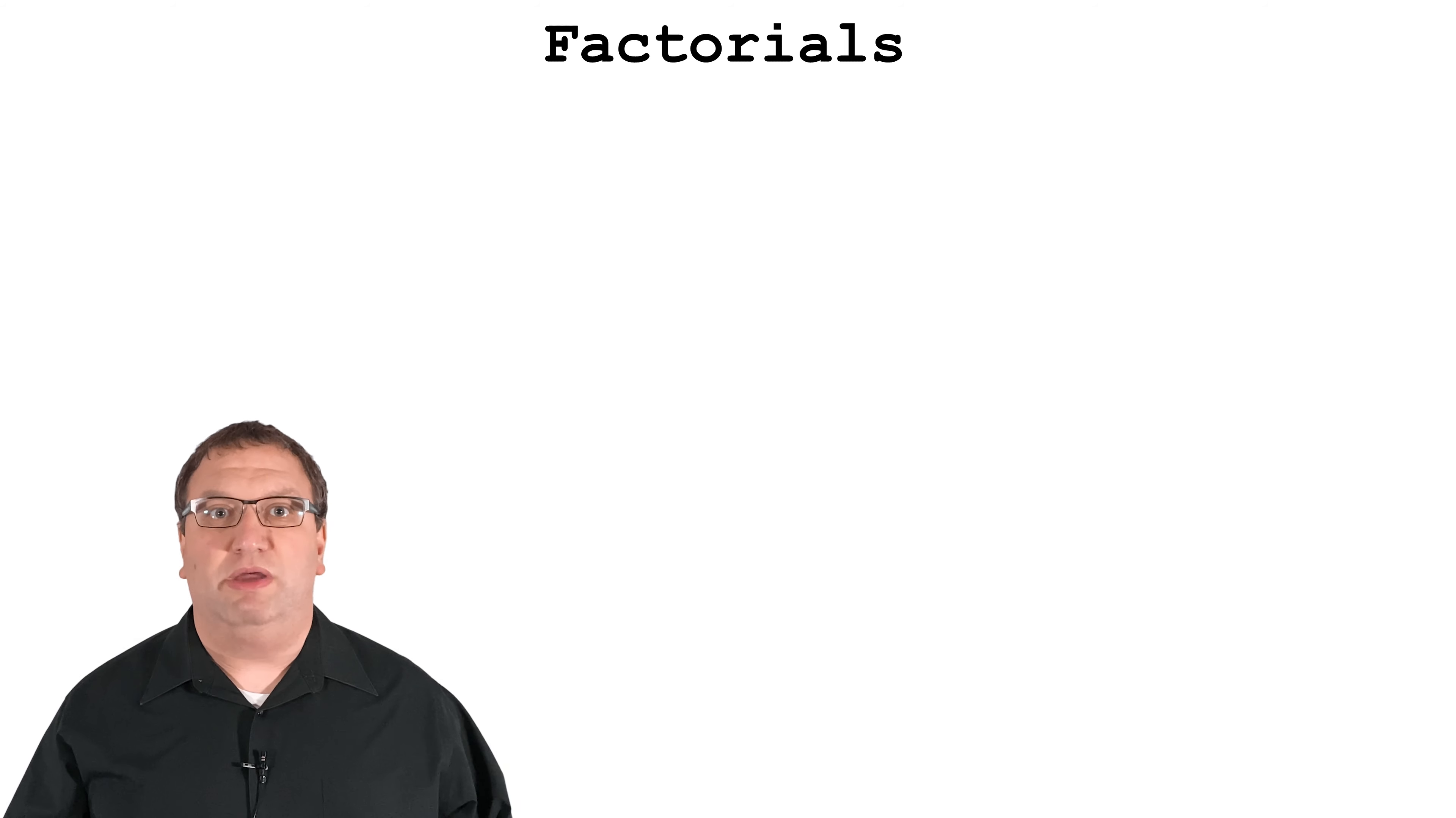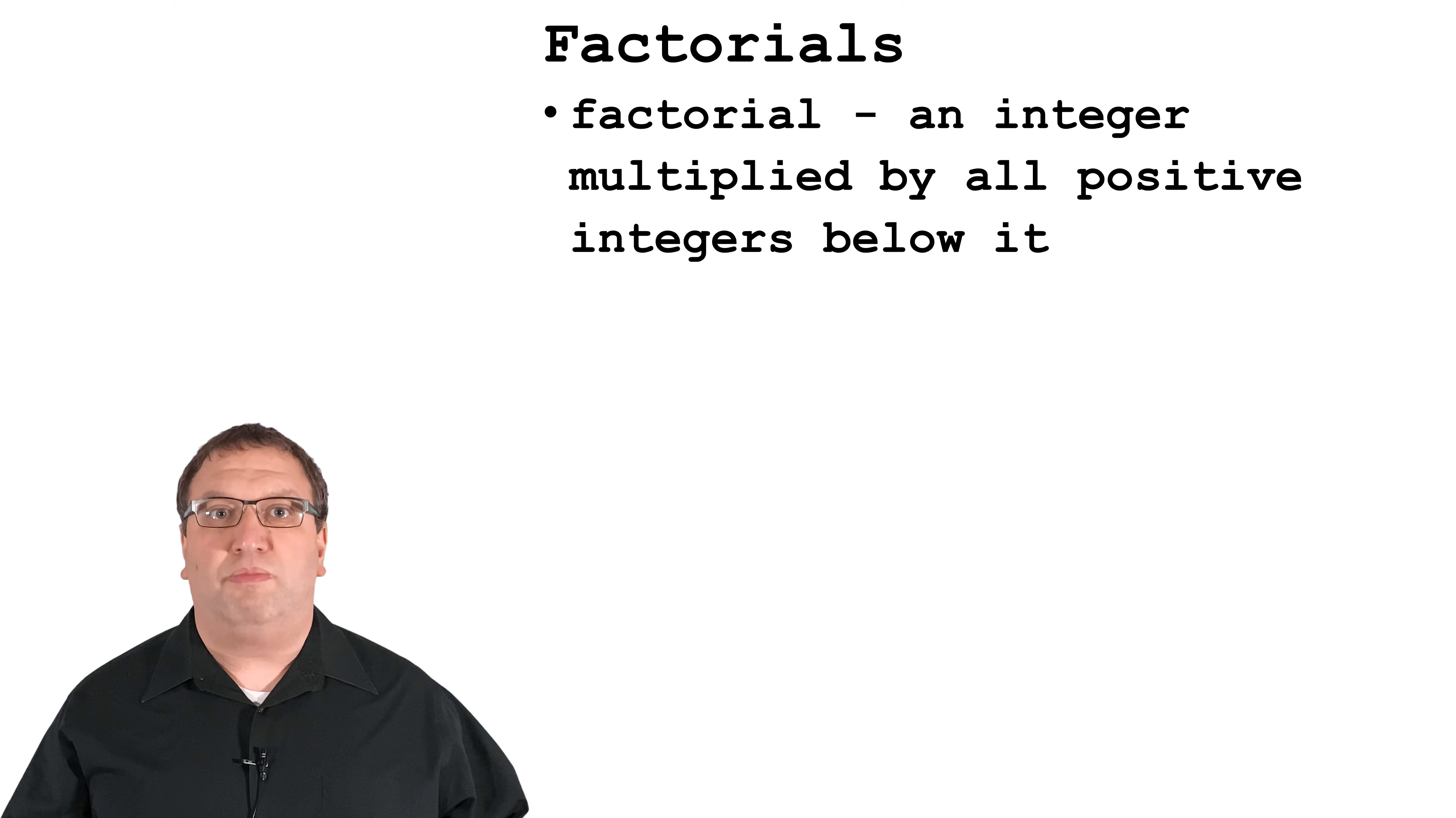Before we jump into an example of recursion, let's look at a mathematical algorithm to calculate factorials. If you don't remember factorials, hang in there for 60 seconds and I guarantee you'll be good. So what's a factorial? A factorial is the product of a positive integer multiplied by all positive integers below it.